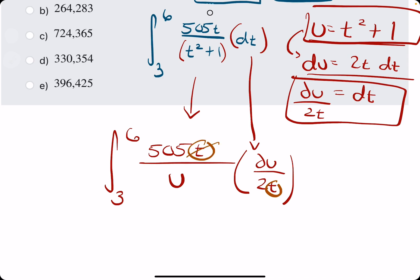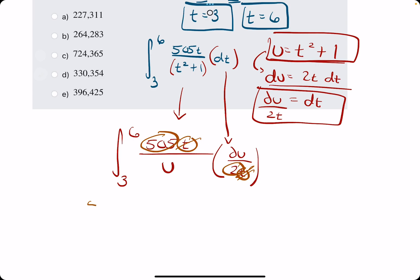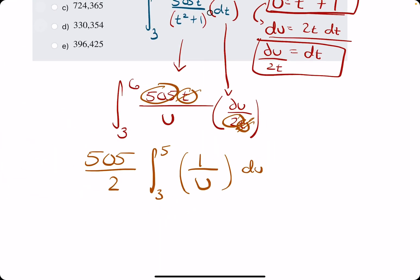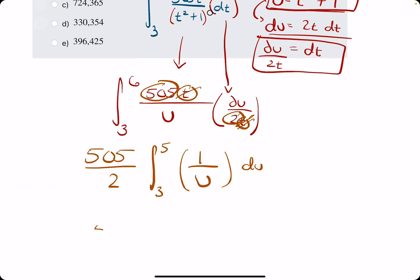So a T on top, T on the bottom allows us to cancel out T. And then we want to gather the coefficients, 505 over 2. And usually we can bring whatever those constants or coefficients are out in front. So I'll just leave it as that fraction for now. Let's think about what we have left on the inside. There's really nothing up top. We could call it DU over U, but I'll call it 1 over U, DU. Personally, I think 1 over U helps us visualize what our antiderivative is going to be a little bit easier. 1 over U has an antiderivative of natural log of the absolute value of U.